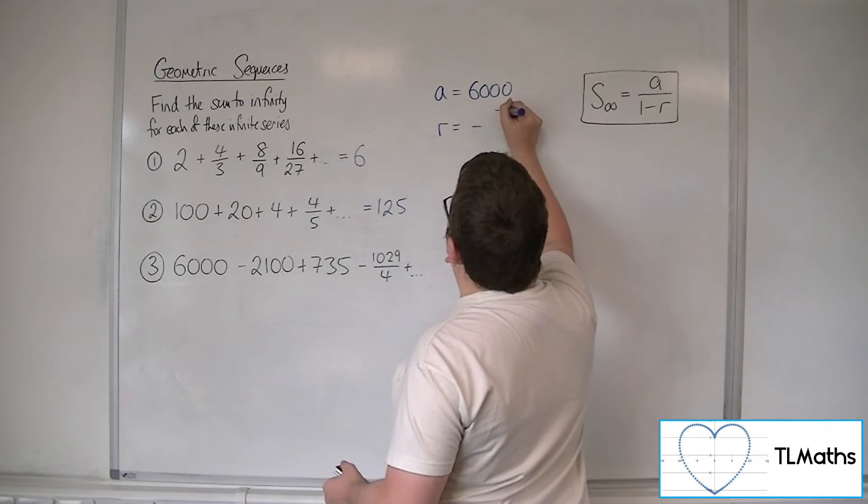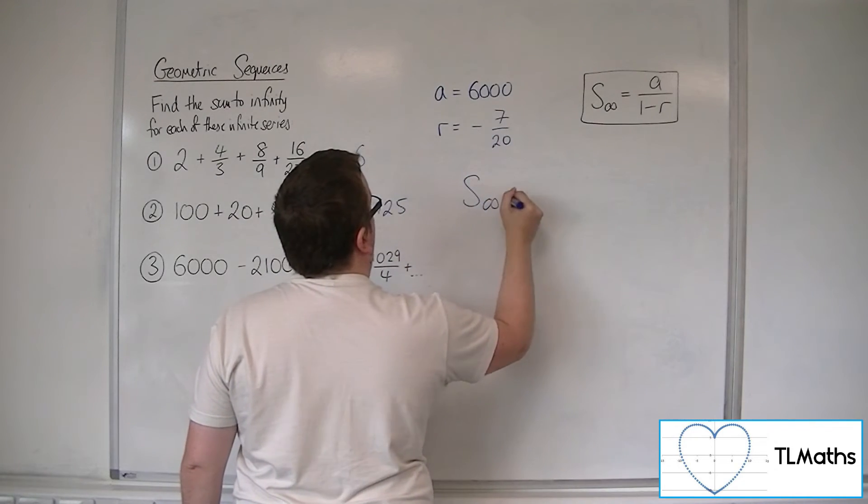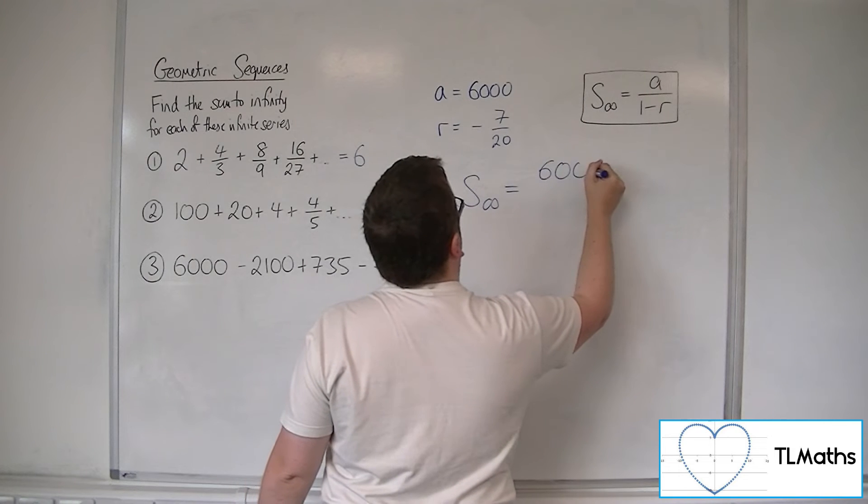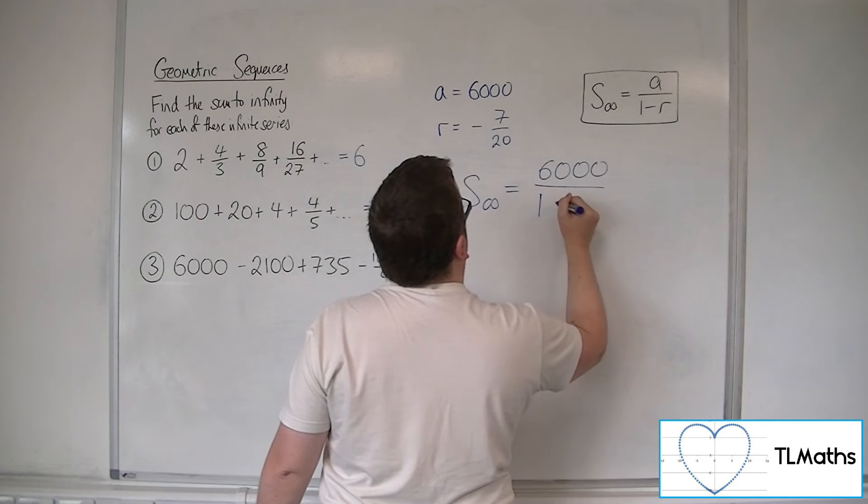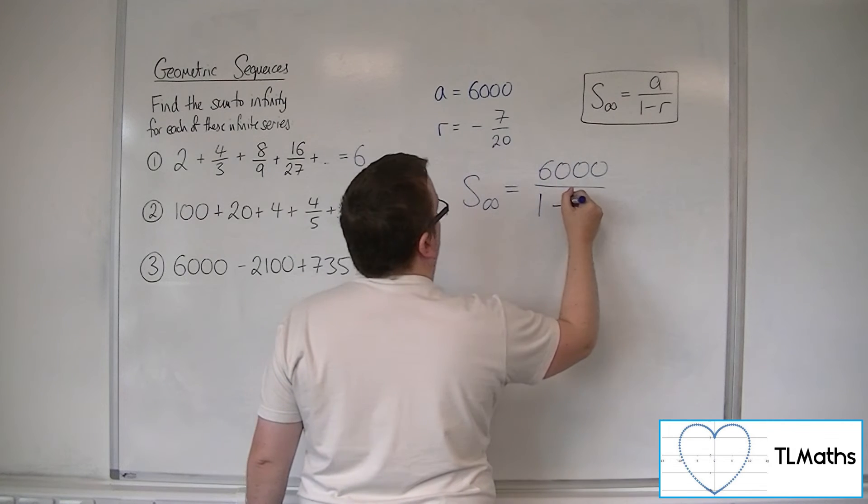So the sum to infinity is the first term, 6,000, over 1 take away r, so plus 7 twentieths.